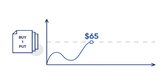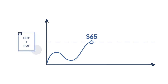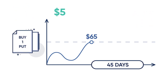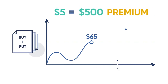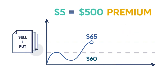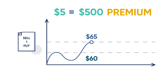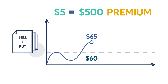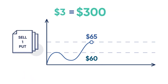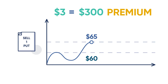You buy a 65 strike put with 45 days until expiration for $5, which equals $500 of premium. As part of the spread, you sell a 60 strike put of the same expiration for $3, which equals $300 of premium.